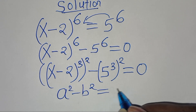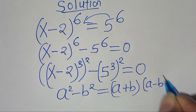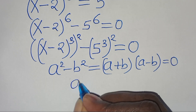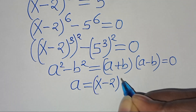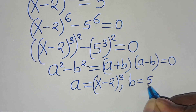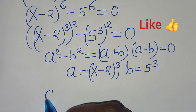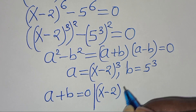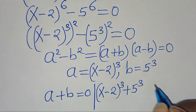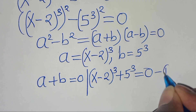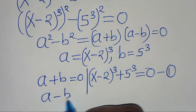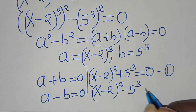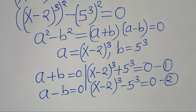This equation is in the form a squared minus b squared, which factors as (a plus b)(a minus b) equals 0, where a equals (x minus 2)^3 and b equals 5^3. This gives us two cases: Case 1: (x minus 2)^3 plus 5^3 equals 0, and Case 2: (x minus 2)^3 minus 5^3 equals 0.